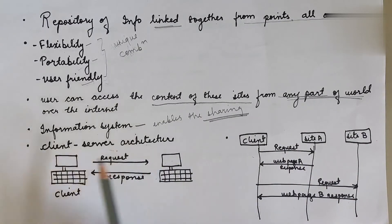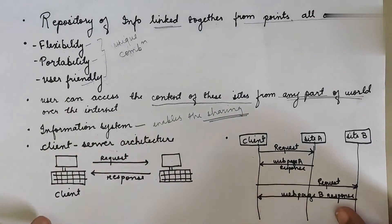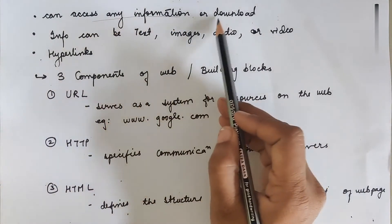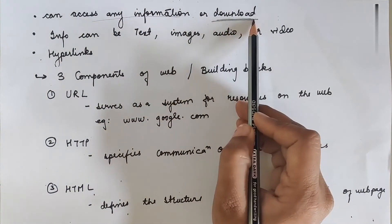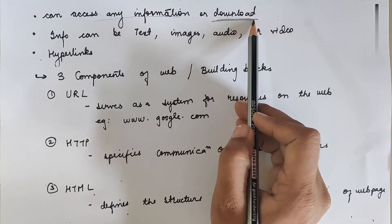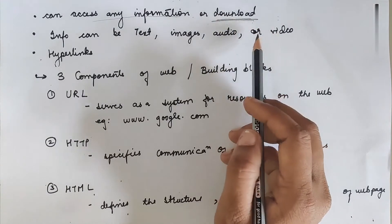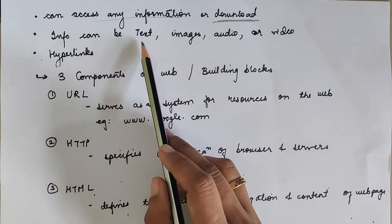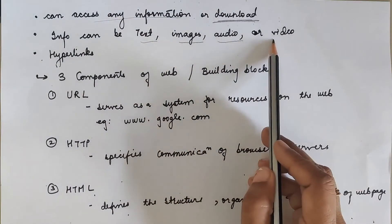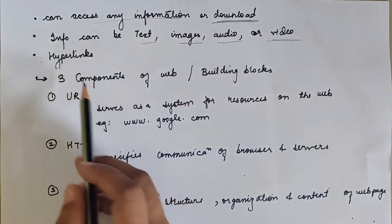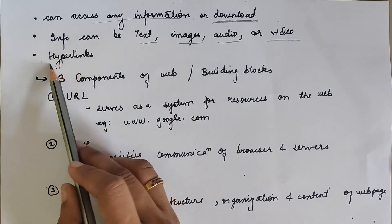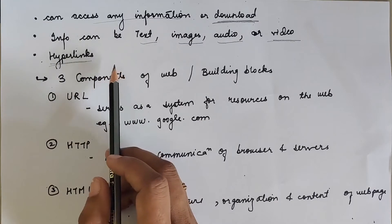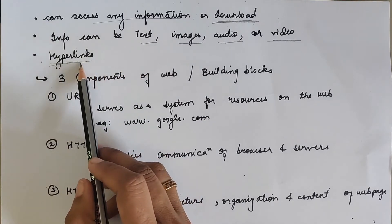It has a simple client-server architecture. You can access this information or download documents, text, or audio available on WWW. Whatever information is available on WWW can be text, images, audio, or even video. One more important thing to know is that all the pages or documents that you are surfing or checking — all the information available on those documents —